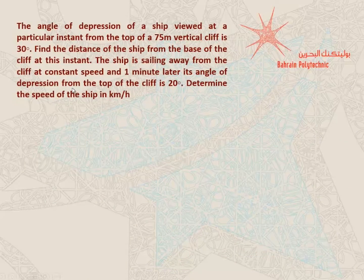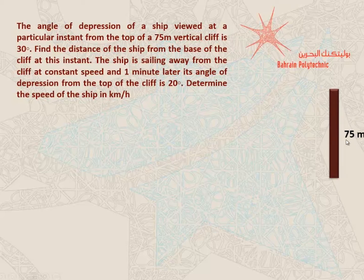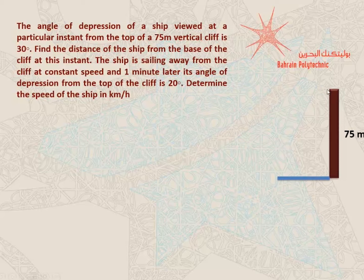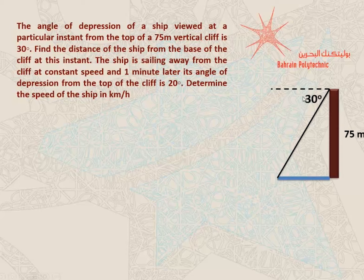Let's move on to the next question. The angle of depression of a ship viewed from the top of a 75 meter vertical cliff is 30 degrees. We've got a vertical cliff 75 meters tall, some water, and a ship sailing in the water. We are measuring the angle of depression from the top of the cliff down to the ship. The angle of depression is the angle between your eyesight level and the thing you're looking at, so it is this angle here, equal to 30 degrees. The question asks us to find the distance of the ship from the base of the cliff.